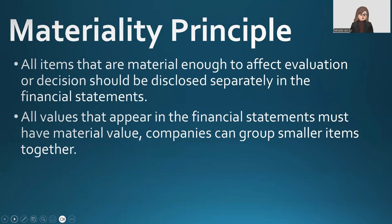Then the Materiality Principle. All items that are material enough to affect evaluation or decisions should be disclosed separately in the financial statements. All values that appear in the financial statements must have a material value; companies can group smaller items together. For example, when a company buys a few trash bins for the office, the cost might be so small that it doesn't significantly affect the company's statements, so reporting the cost of the trash bins separately isn't necessary due to their immaterial nature. However, a large purchase like a piece of manufacturing equipment must be reported because it significantly affects the company's financial position.